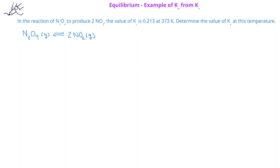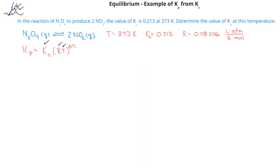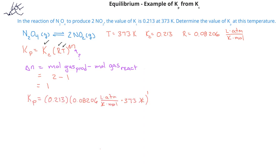In this problem, we are asked to determine the value of Kp at a given temperature if we already know the Kc value for a specific reaction. The first thing we want to do is recall the mathematical relationship: Kp equals Kc times RT raised to the delta n power. We already have the temperature in Kelvin. What we have to find out is the value of delta n. We recall that delta n is the moles of gas on the product side minus the moles of gas on the reactant side. In this case, we have 2 moles of gas on the product side minus 1 mole on the reactant side, giving a delta n of 1.